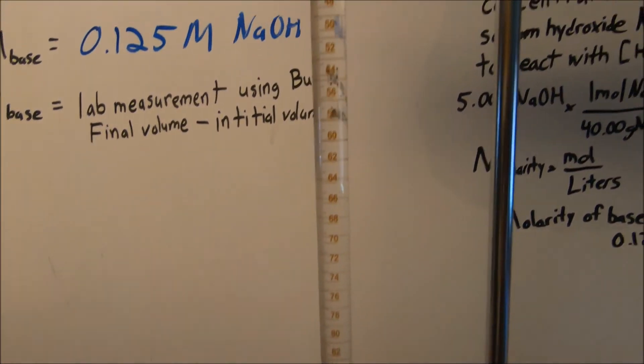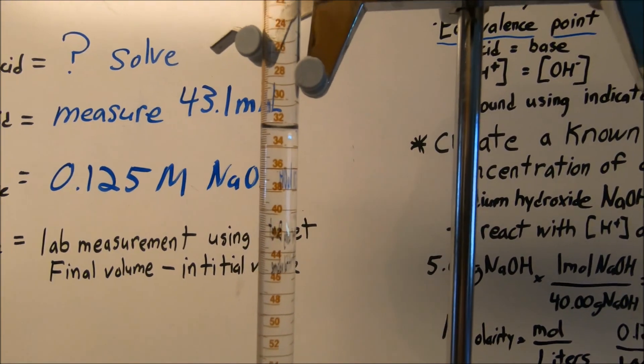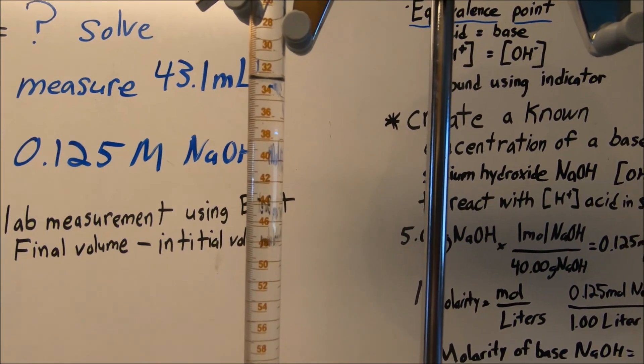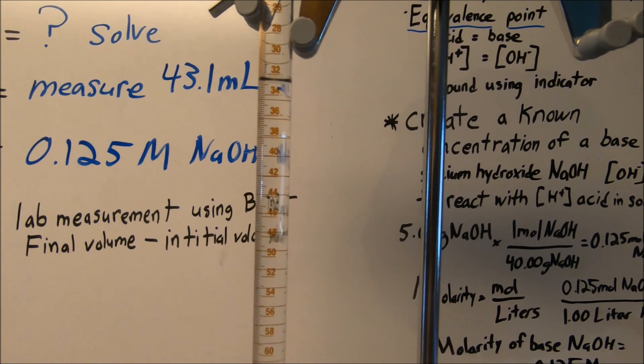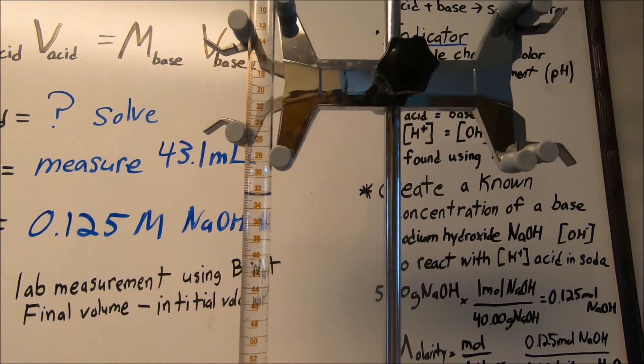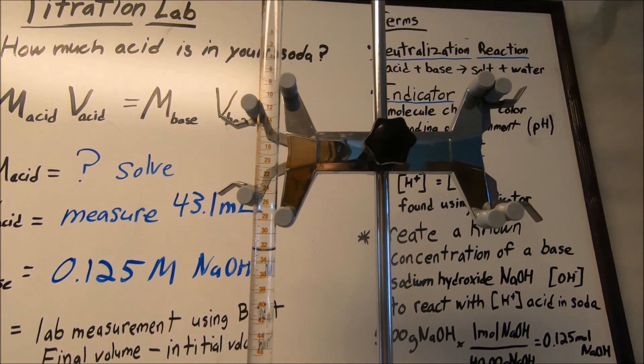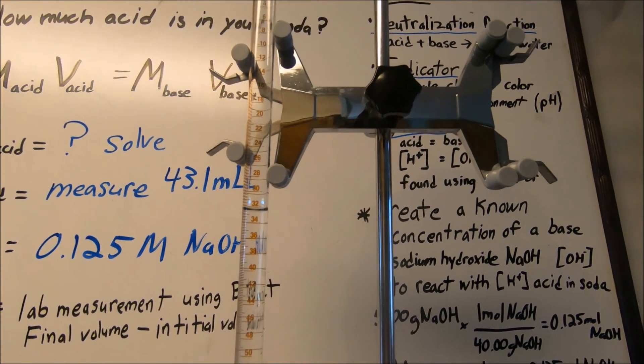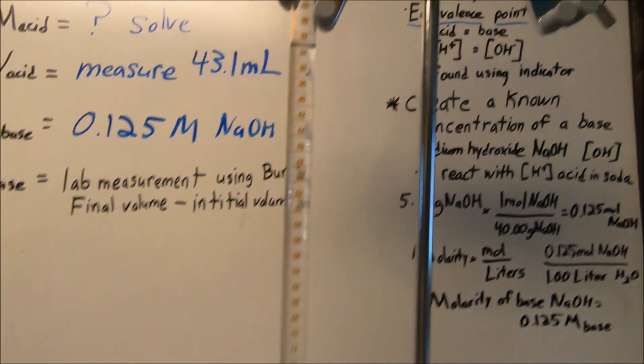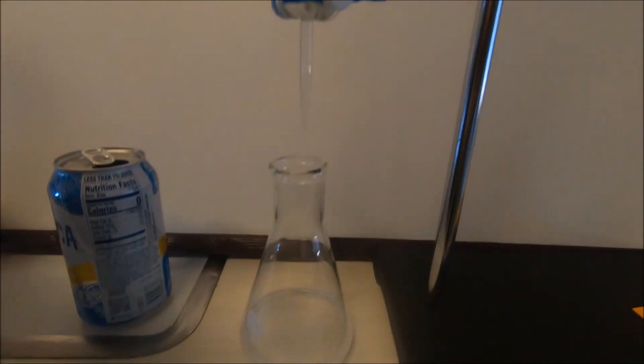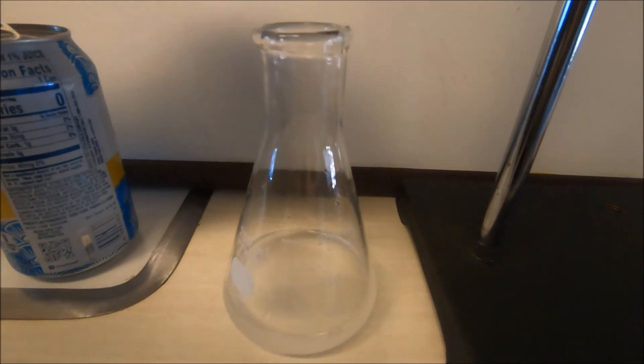We are going to be using our burette to measure. Our burette is set up so that we can actually calculate how much base we are adding to the chemical reaction in order to see that initial and final amounts. Before we get started, our color indicator, our phenolphthalein is going to be put in, we're going to use about seven, eight drops.